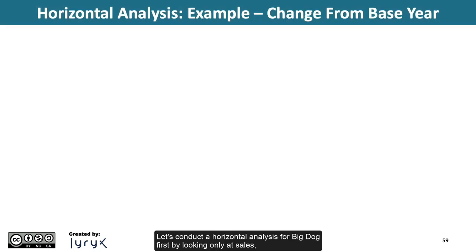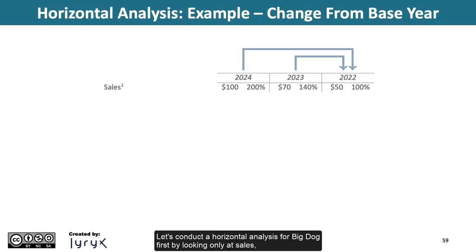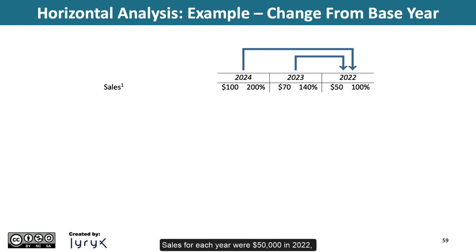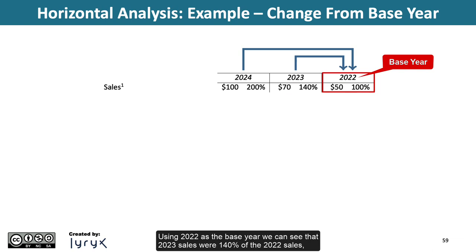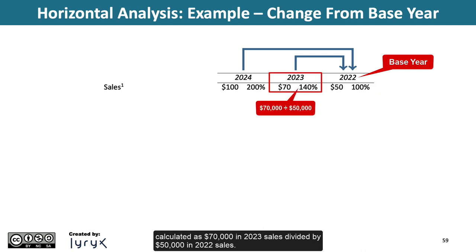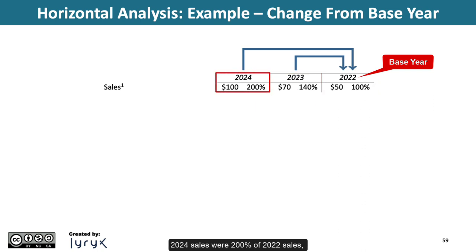Let's conduct a horizontal analysis for Big Dog by looking only at sales, gross profit, and net income over the three-year period from 2022 to 2024. Sales for each year were $50,000 in 2022, $70,000 in 2023, and $100,000 in 2024. Using 2022 as the base year, 2023 sales were 140% of 2022 sales, calculated as $70,000 divided by $50,000. 2024 sales were 200% of 2022 sales, calculated as $100,000 divided by $50,000.